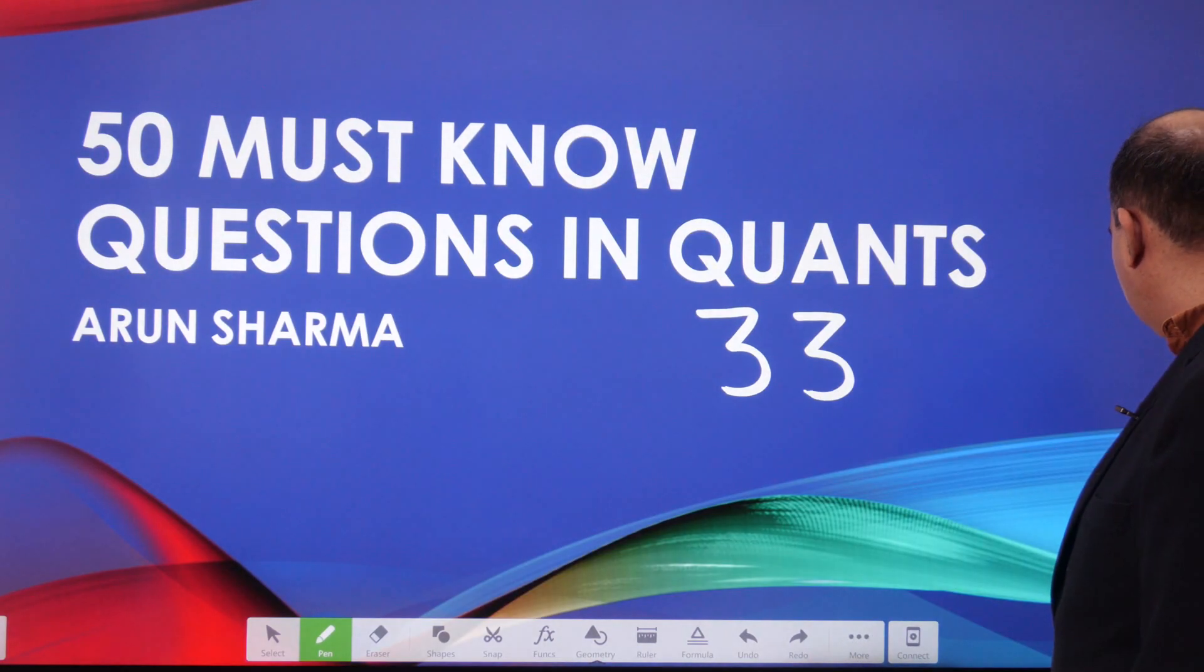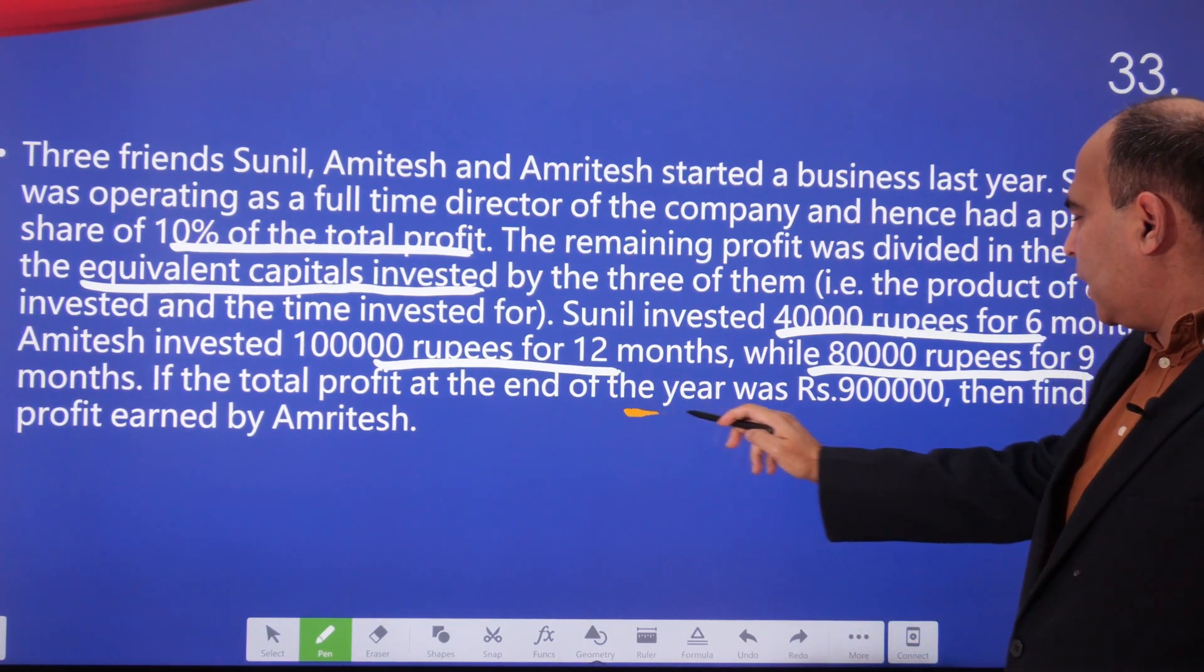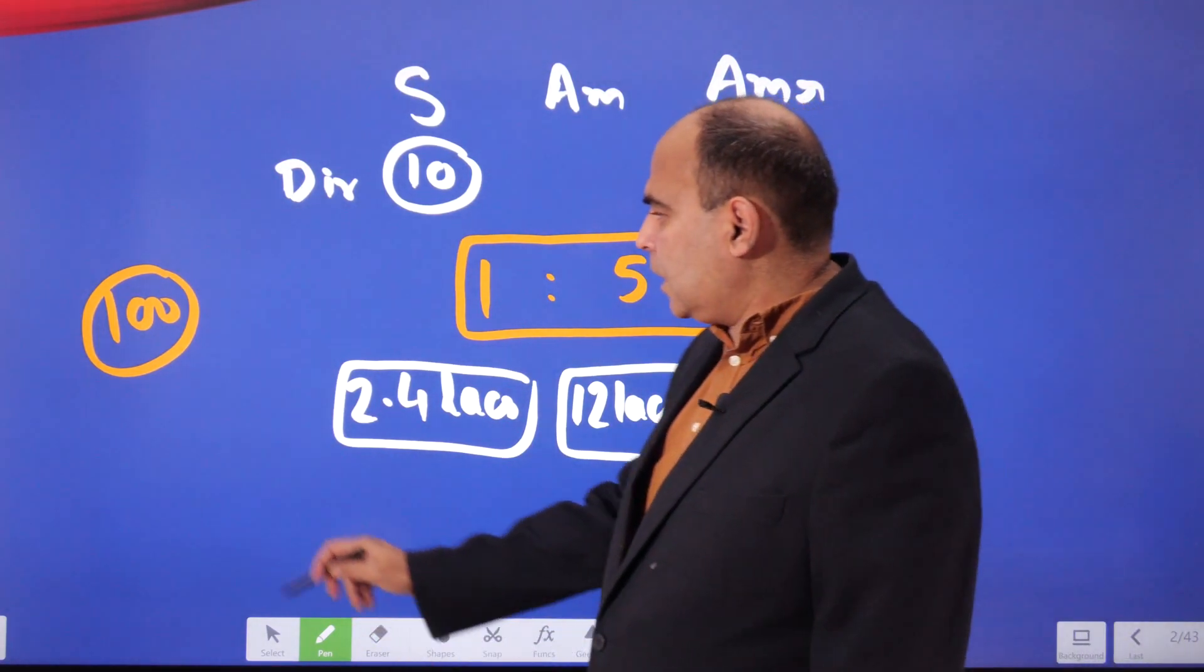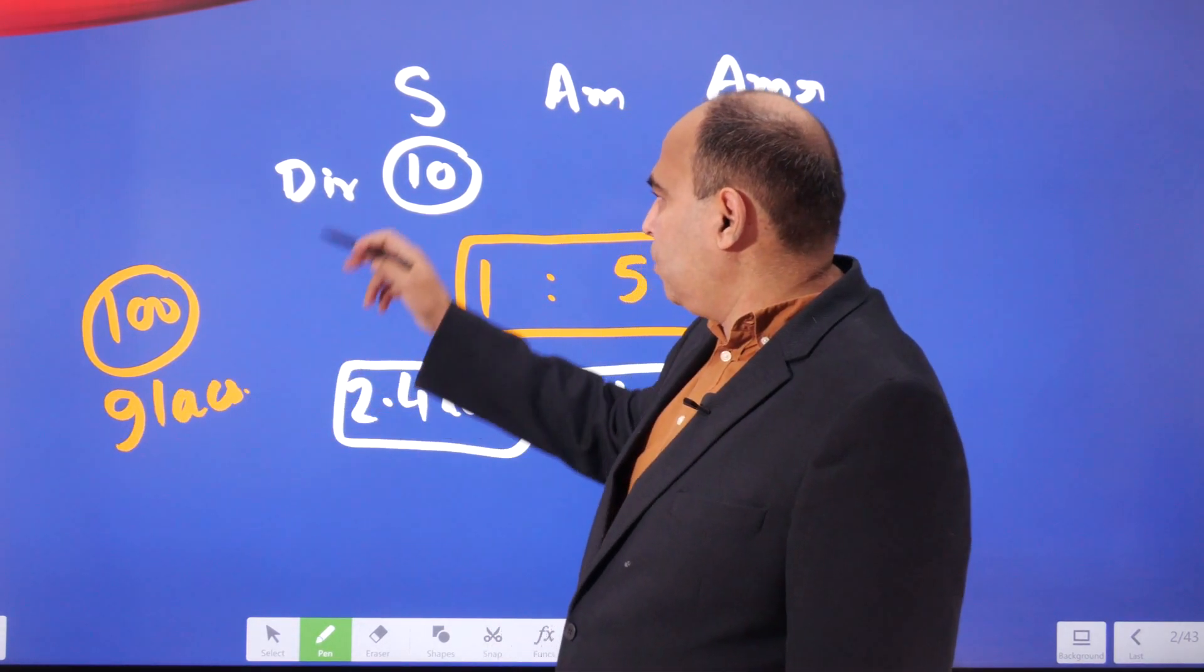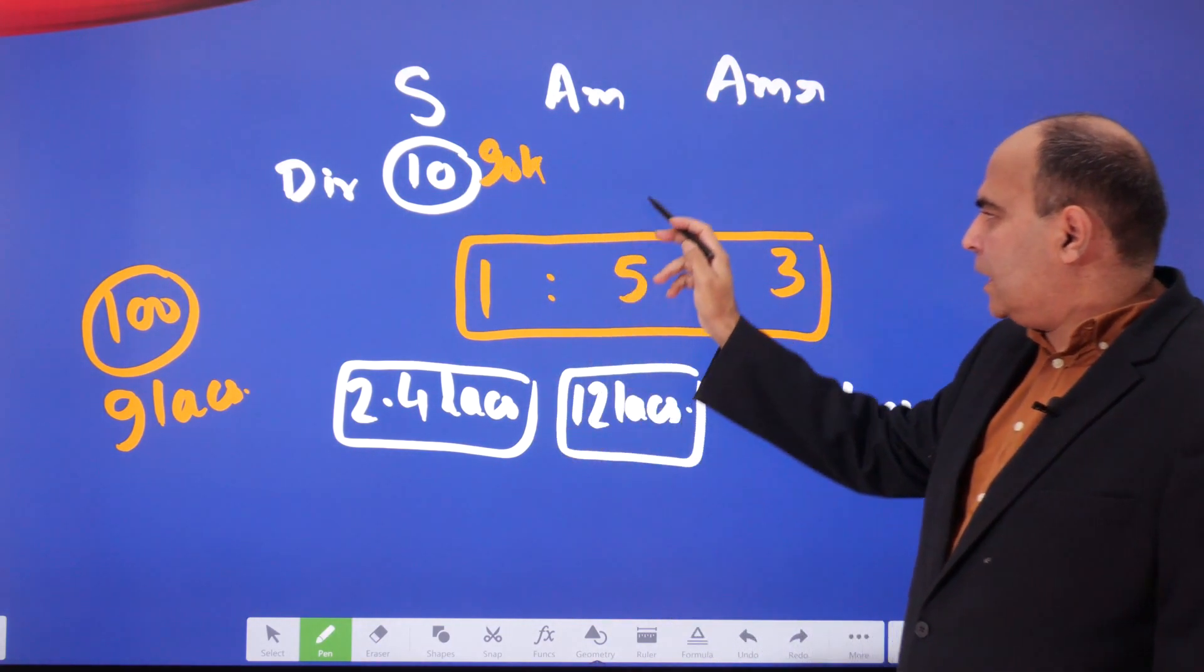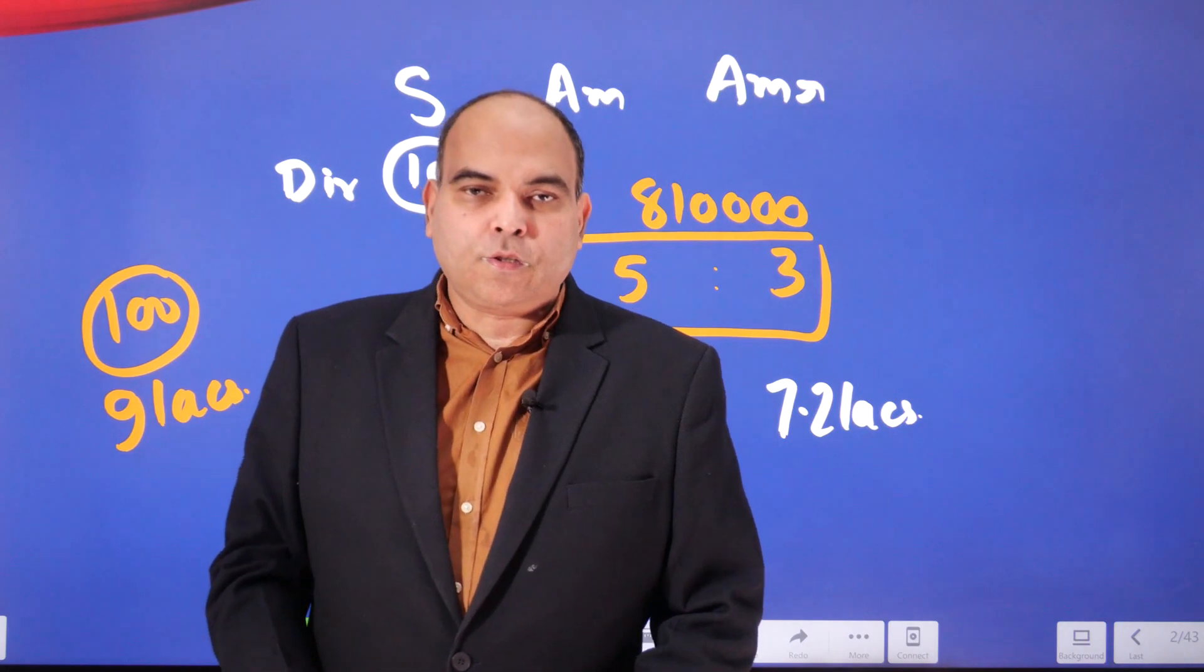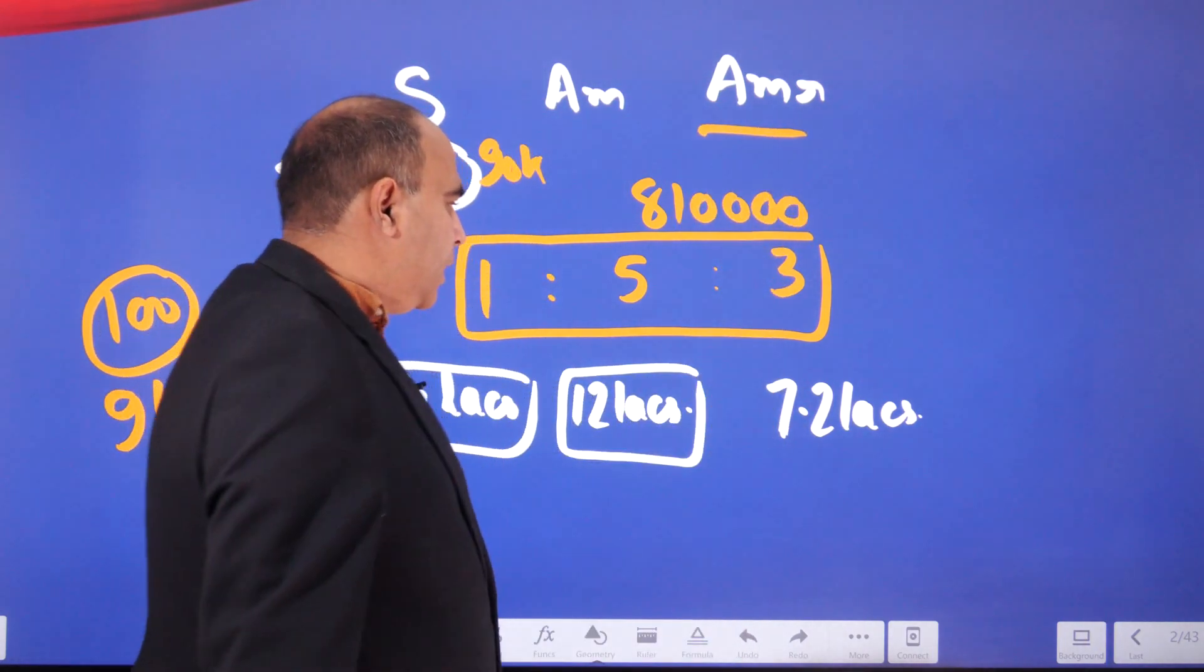The question says if the total profit at the end of the year is nine lakhs, then find the profit earned by Amritesh. Total profit is nine lakhs. The profit to be given to Sunil is ninety thousand, so eight lakh ten thousand is the profit to be divided in the ratio of 1:5:3.